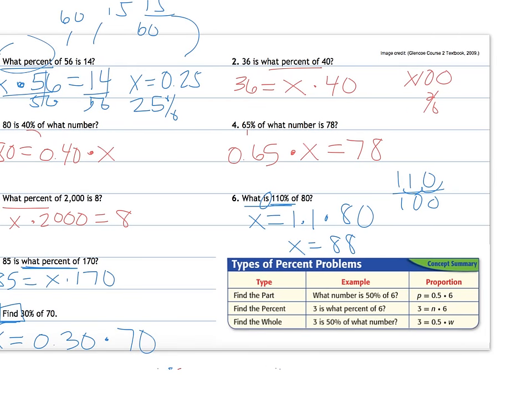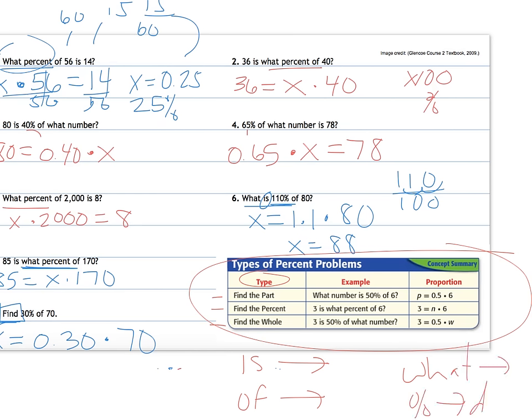Okay, so remember 'find' is the same as 'what is'. So again, important concept for you to have down, different types of problems, so finding the part, finding the percent, finding the whole, maybe writing some examples down of what that looks like, and I would definitely have down what 'is' translates to, what 'of' translates to, what 'what' translates to, and then I write my percent as a decimal.